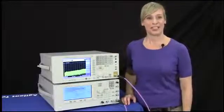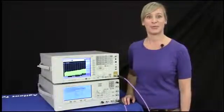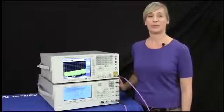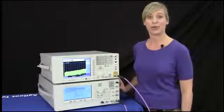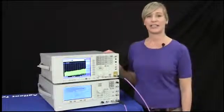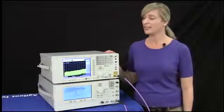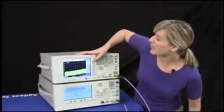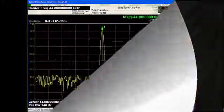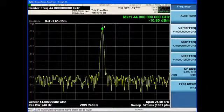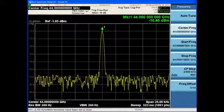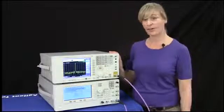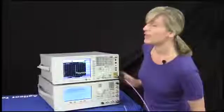For my first demonstration, I'll show you the EXA's performance at 44 GHz. For the setup, we have the PSG signal generator outputting a 44 GHz signal to our EXA signal analyzer. The EXA comes with an auto-tune function. And by pressing the auto-tune function, the signal analyzer detects the strongest signal within the span. This is a great tool for quickly identifying your signal of interest.